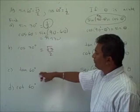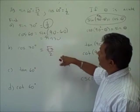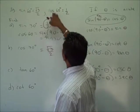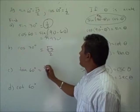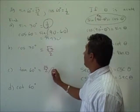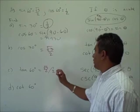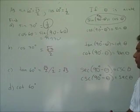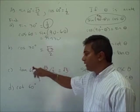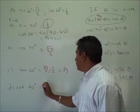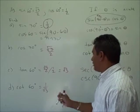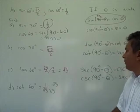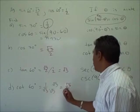We know that tangent theta equals sine over cosine, so tangent of 60° equals sine of 60° over cosine of 60°, which is the square root of 3 over 2 divided by 1 half. This reduces to give us the square root of 3. So tangent of 60° equals the square root of 3. Cotangent of 60° is the inverse of tangent of 60°, so this equals 1 over radical 3. Rationalizing the denominator gives us radical 3 over 3.